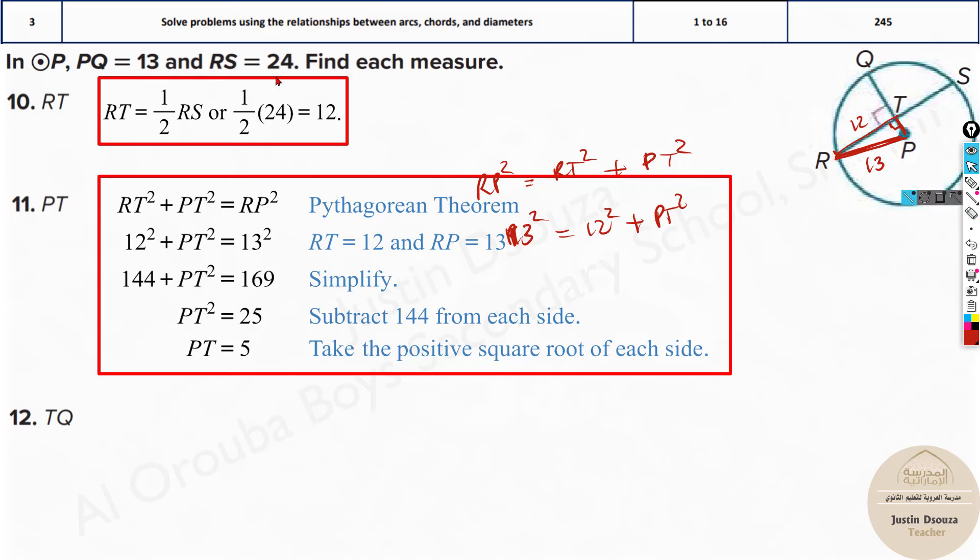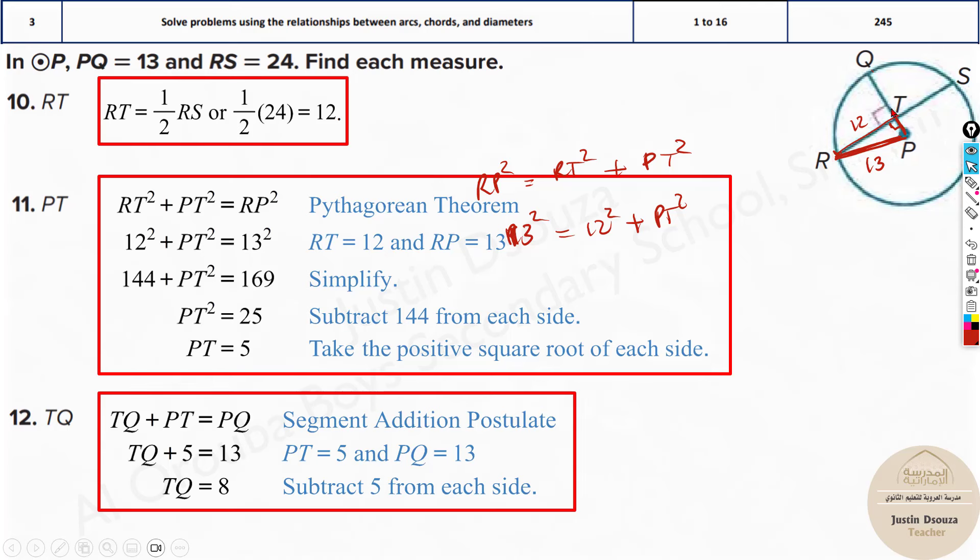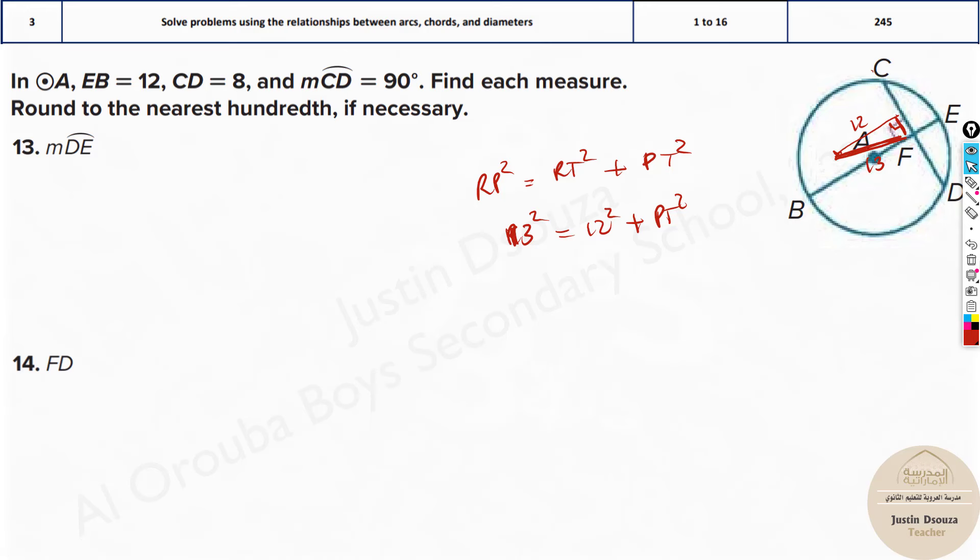What about TQ? TQ is very simple. We know the radius is 13. 13 minus PT we just now solved, that will be the answer. 13 minus 5 is 8.